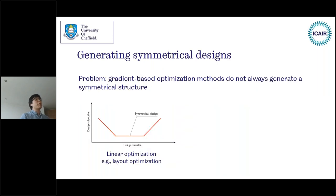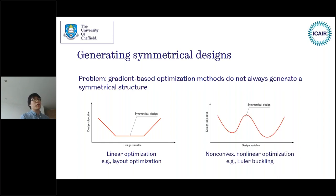Next, I'll talk about symmetrical designs and explain why optimization methods do not always generate a symmetrical structure. In many cases, the optimal solution in a linear optimization problem is a line instead of a point — meaning any point on that line is equally optimal. Even if one point corresponds to the symmetrical design, the optimization algorithm doesn't know that; it will converge at any point on that line. If the problem becomes more complex, for example a non-linear optimization, the symmetrical design may not be optimal and the algorithm will push nodes left or right.